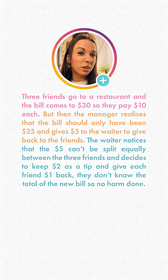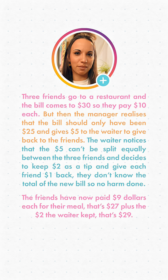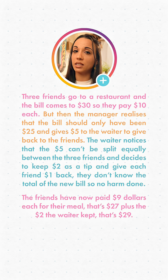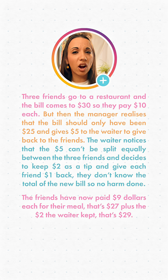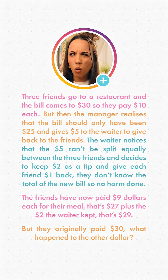They don't know the total of the new bill, so no harm done. The friends have now paid $9 each for their meal. That's $27, plus the $2 the waiter kept, that's $29. But they originally paid $30. What happened to the other dollar?